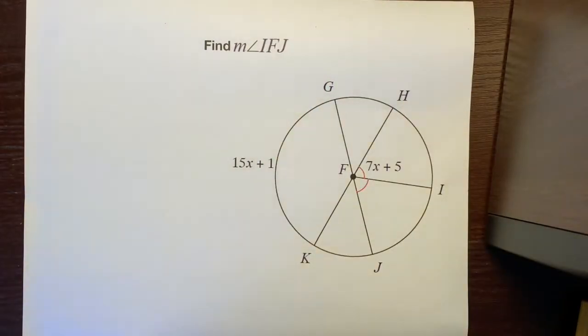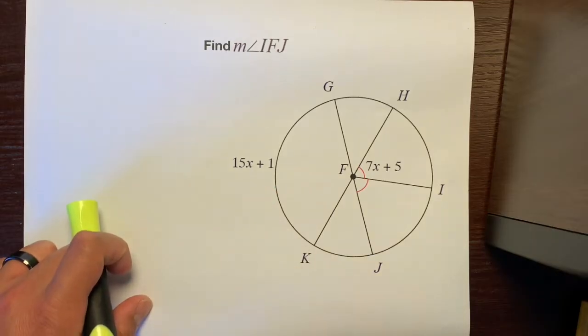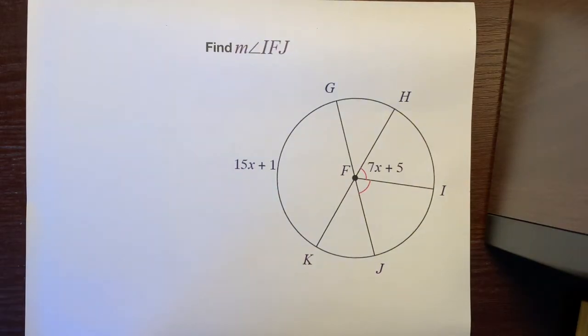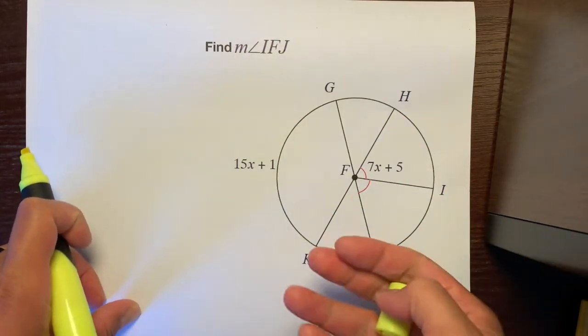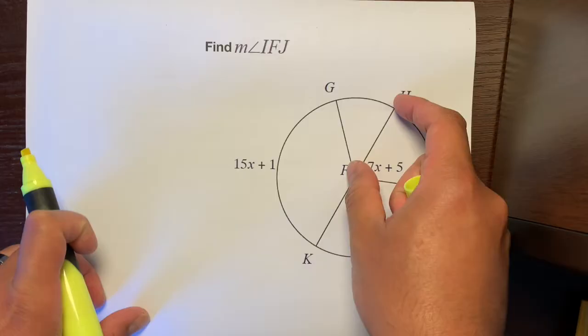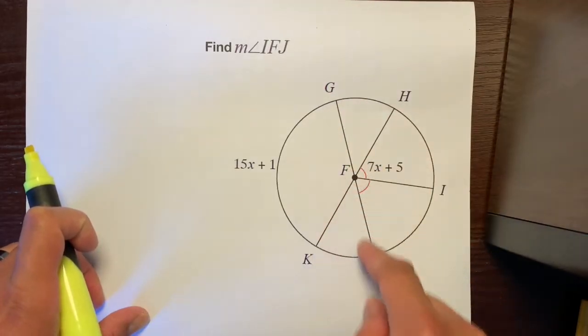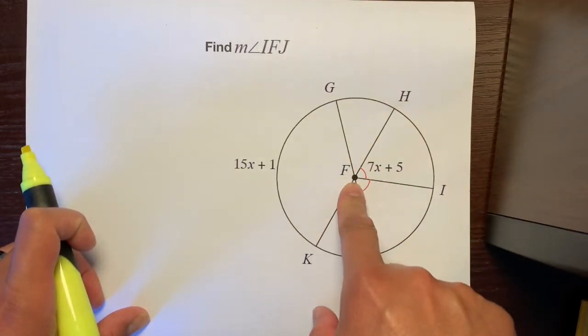Hello, this is Mr. Kinyanola, and I'm going to help you find the measure of angle IFJ. Let's see what we have here. We have a bunch of central angles. We know that these are central angles because all of these are radii that meet at the center.